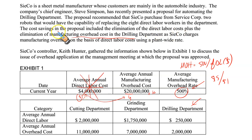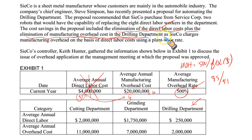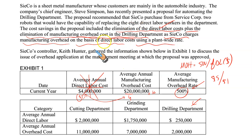If your application base goes away, it doesn't mean the overhead isn't there. Rent is there. Insurance is there. Property tax is there. Depreciation is there. Plant managers' and supervisors' salaries are there. Fixed costs are there. Elimination of labor doesn't mean the overhead will go away.